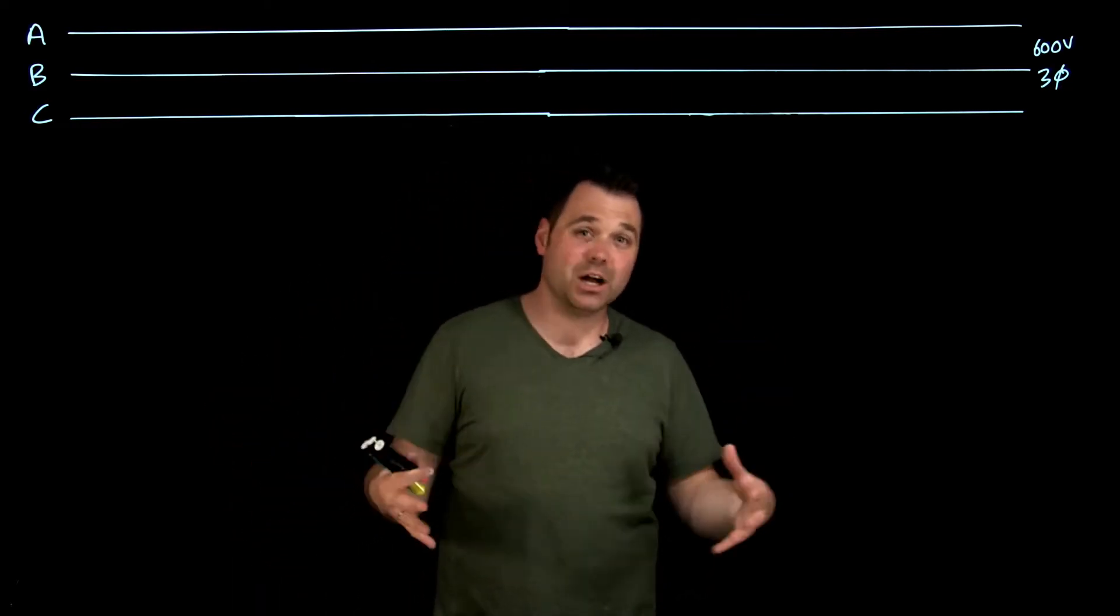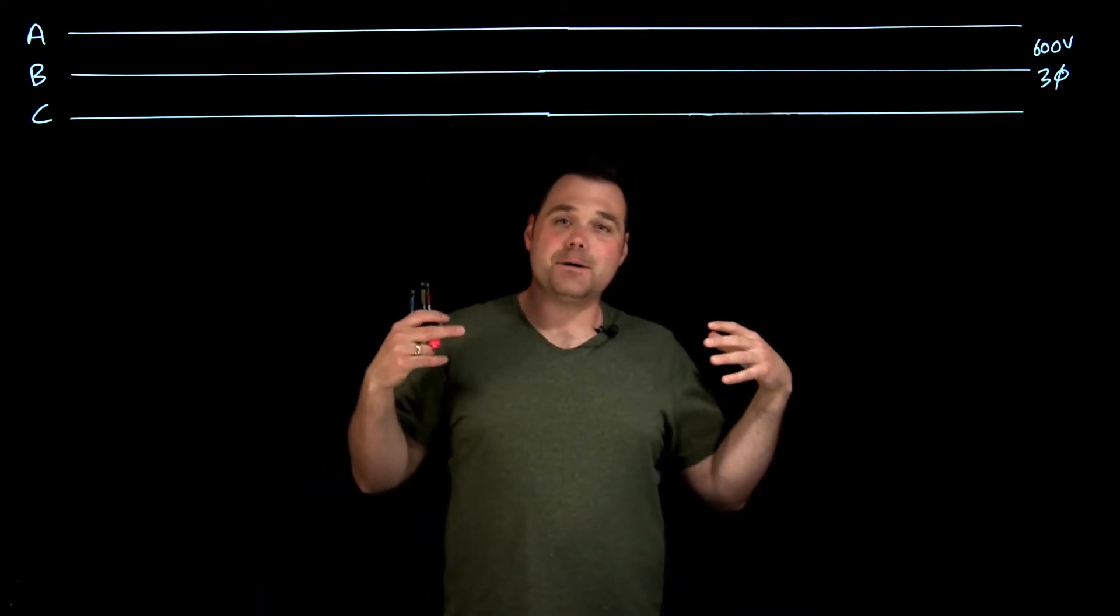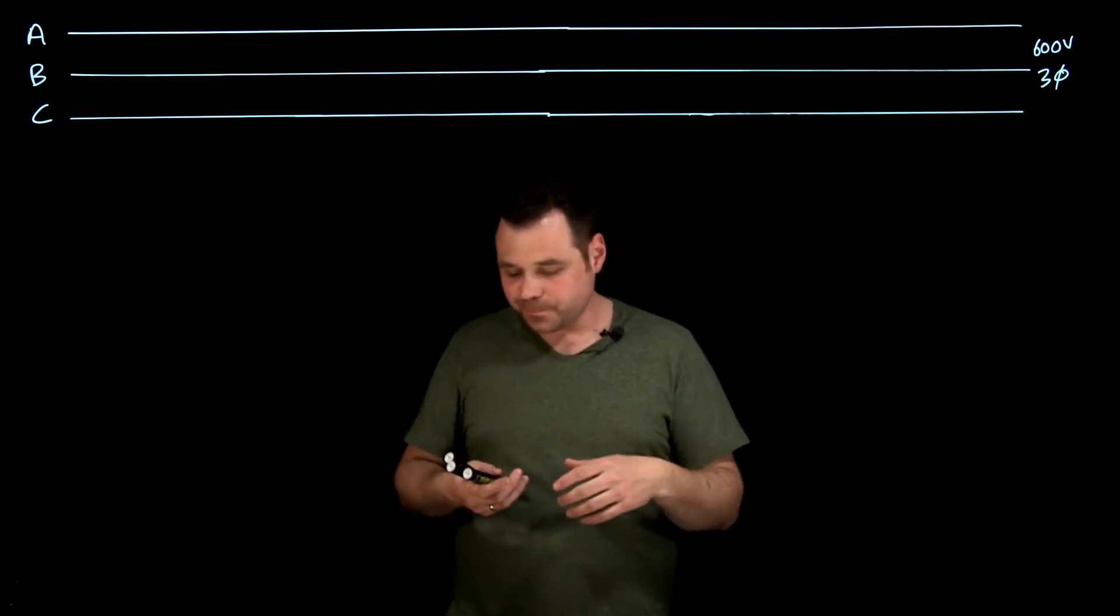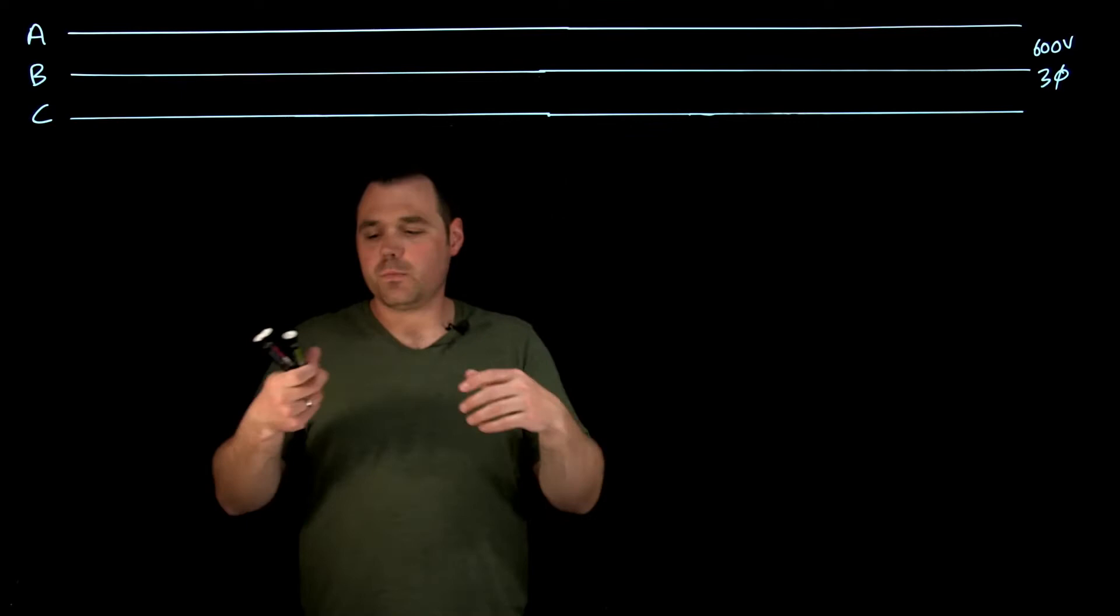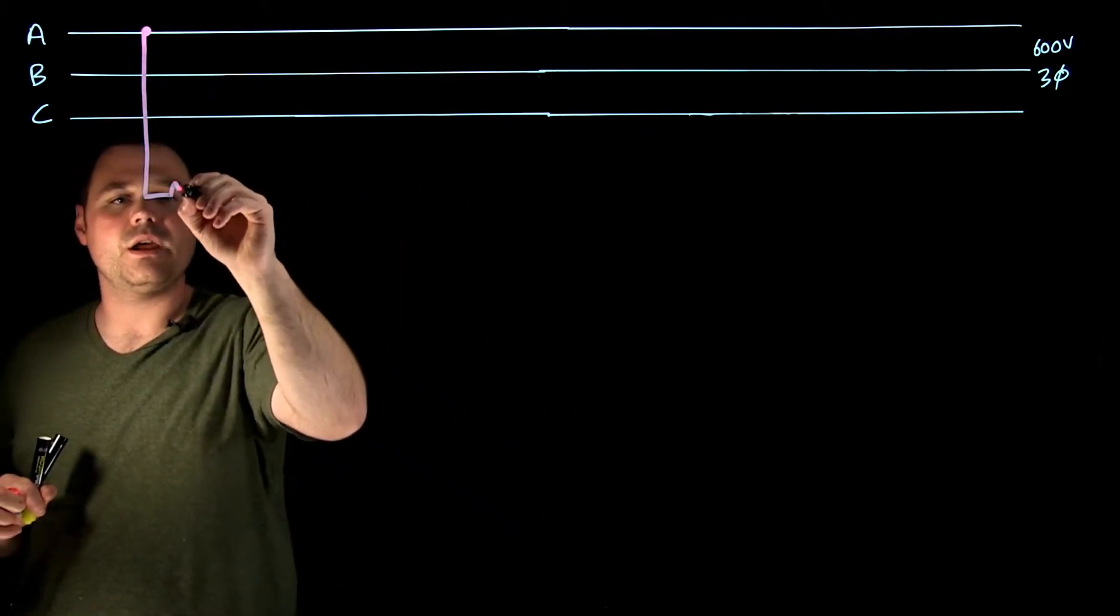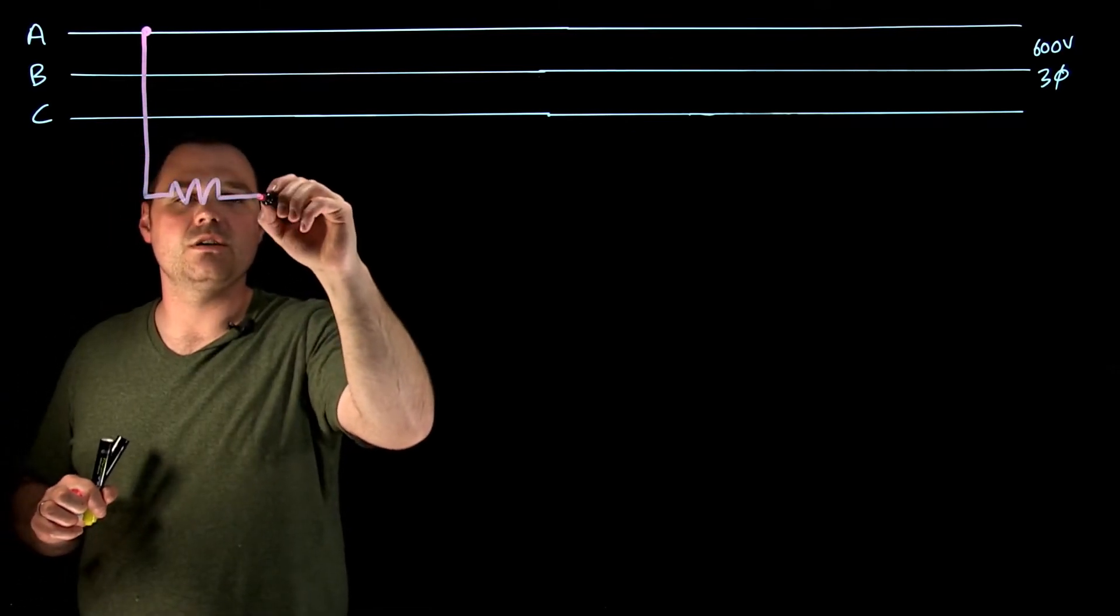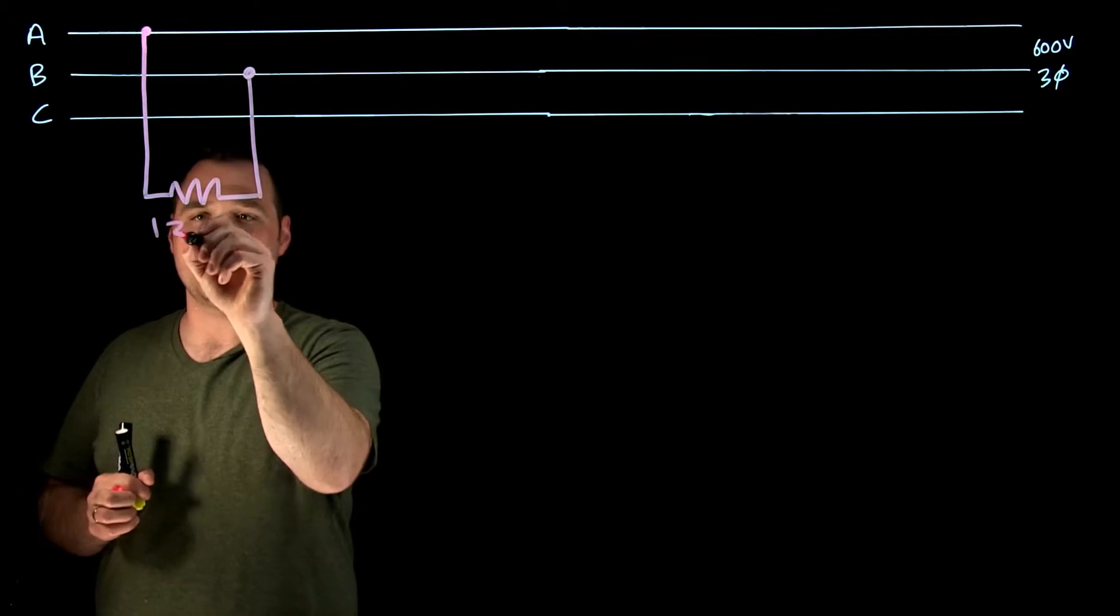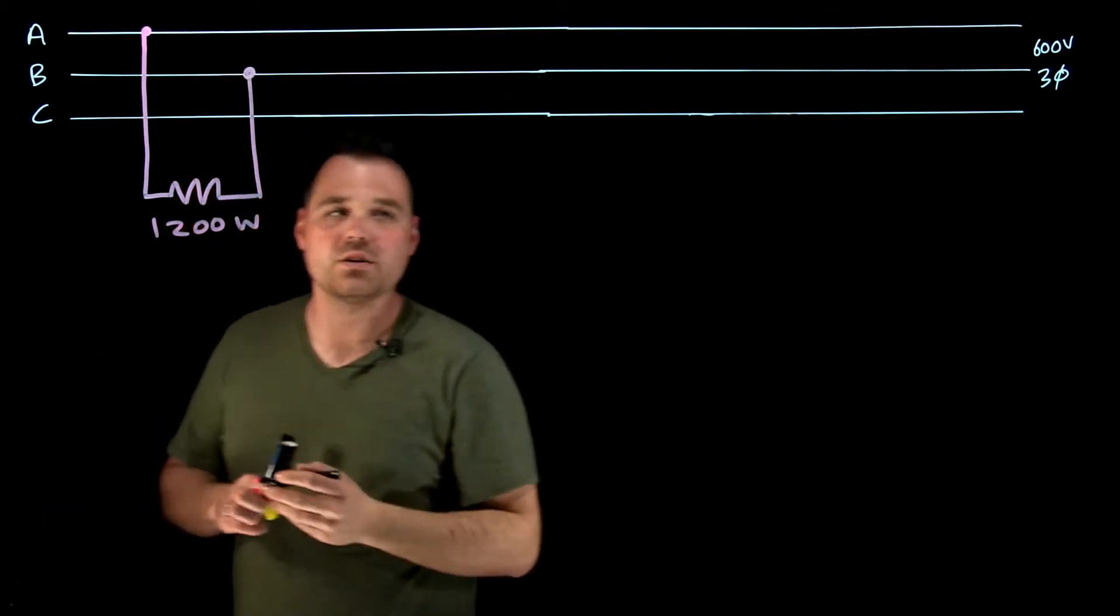In this video, we're going to do a delta load, and maybe down the road, I'll do another video with a Y load. So what I want to do here is on phase A, so from A, I'm going to connect down to a resistor, and that's going to go back up to B, and let's say this is a 1200 watt resistor.